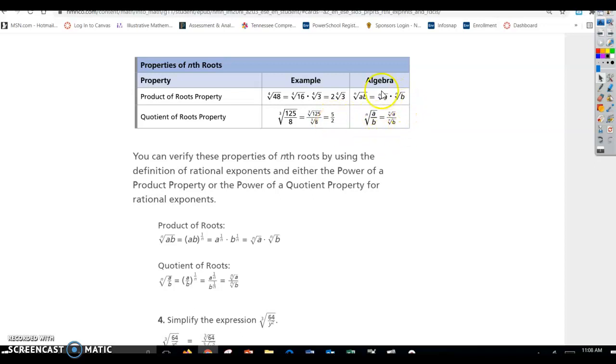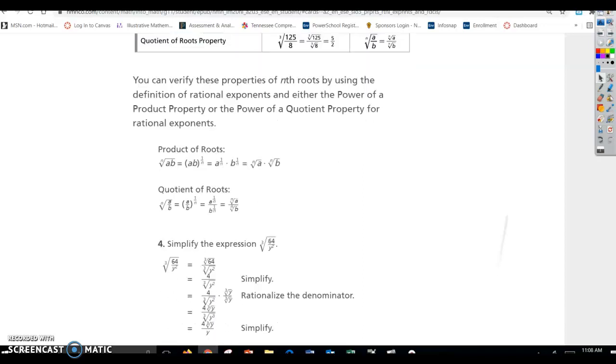And just using variables, the algebraic way, this is an example to keep in your notes. You can verify these properties of nth roots by using the definition of rational exponents and either the power of a product property or the power of a quotient property for rational exponents.